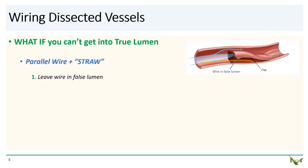But what if, try as you might, you're not able to get into the true lumen? The most common reason is compression of the true lumen by the false lumen, because as blood and injected contrast enters the false lumen, it gets larger and larger and begins compressing the true lumen, making it extremely difficult to wire. The subsequent formation of an intramural hematoma in the false lumen does not make things any easier.